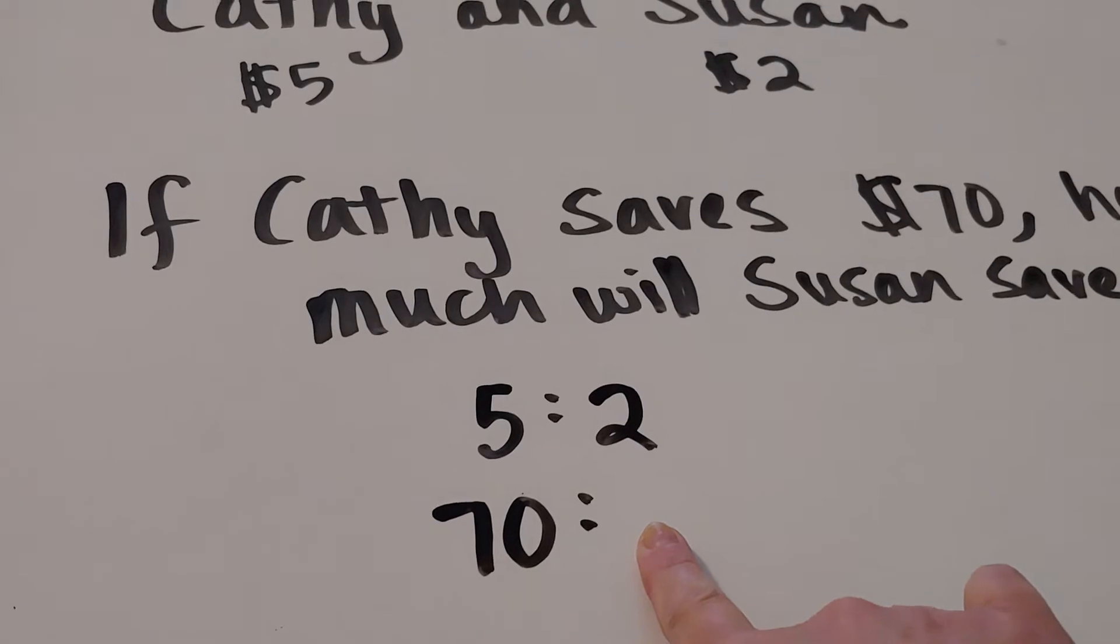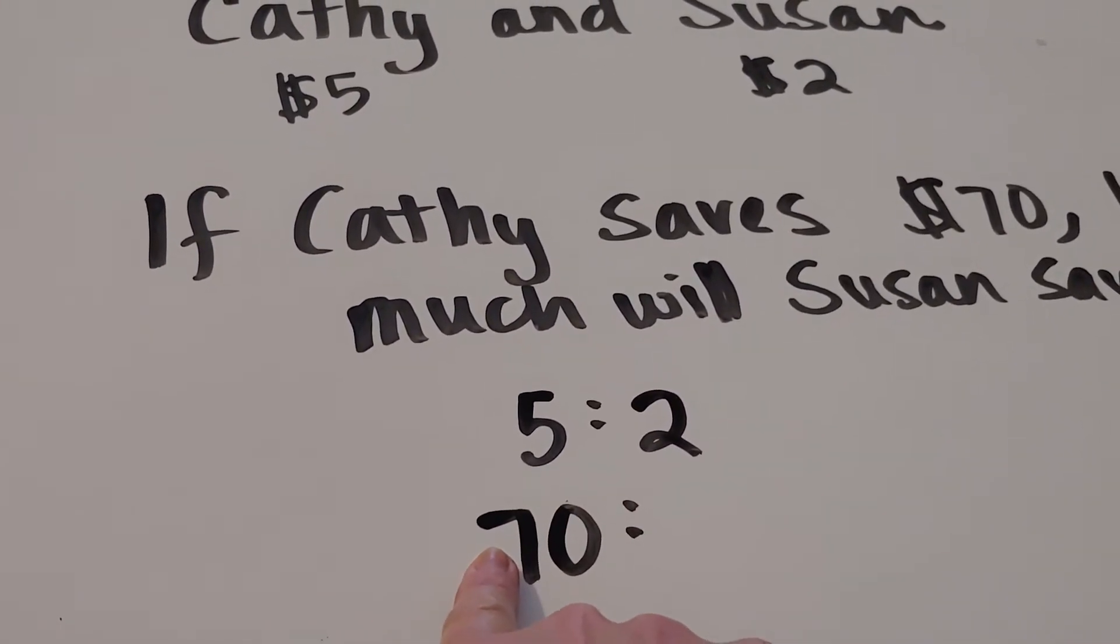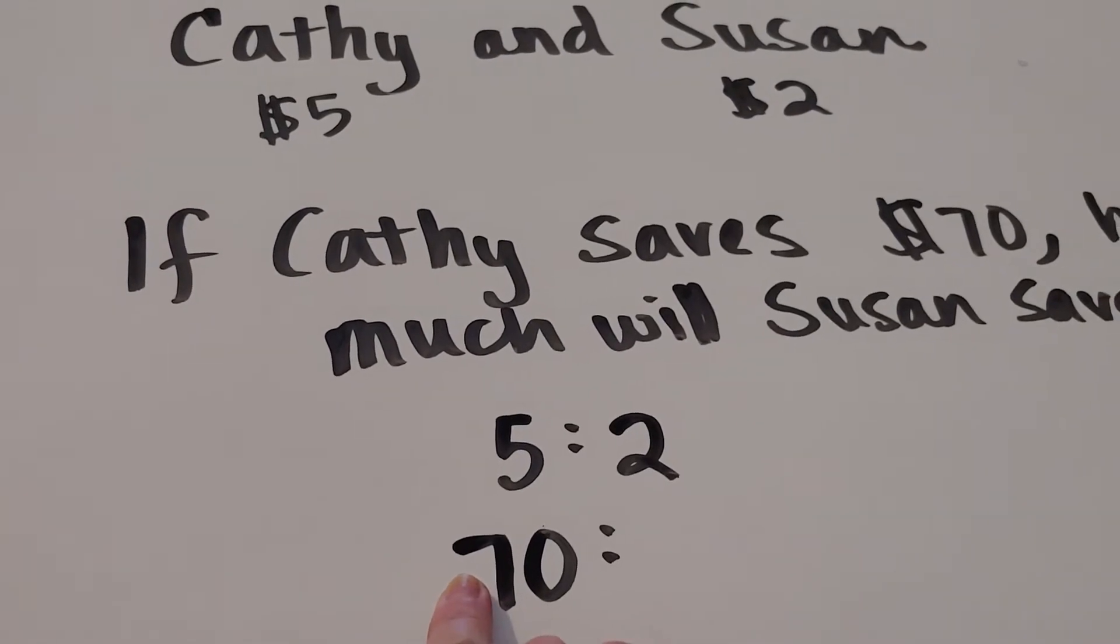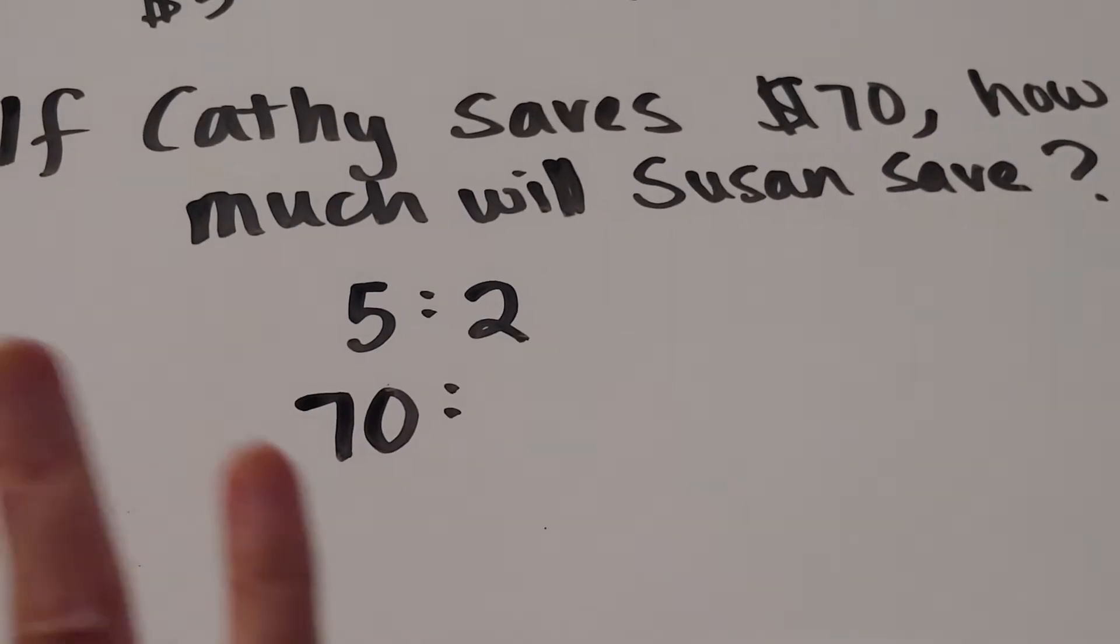Now we've used a lot of looking at multiples. So five times what gets me to 70? But what you could also do is use a tape diagram. This tape diagram may get a little messy, but we're going to try our best.